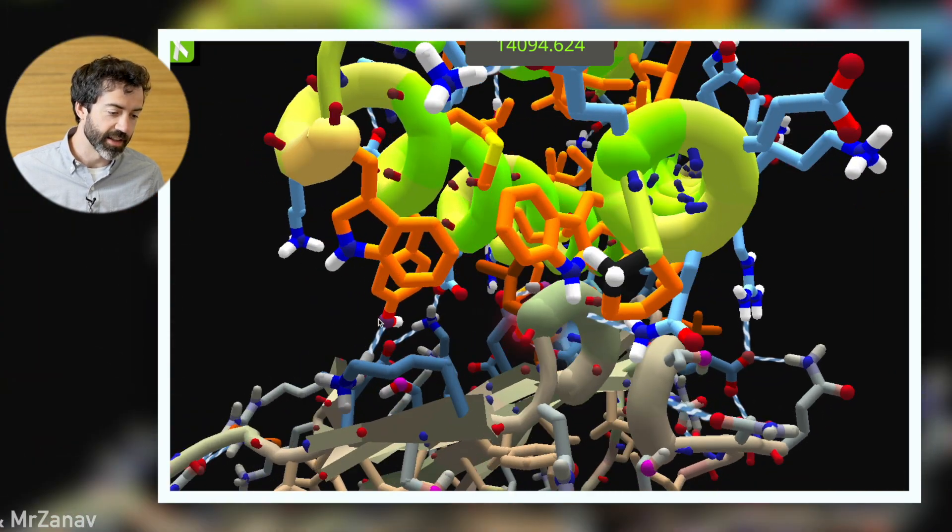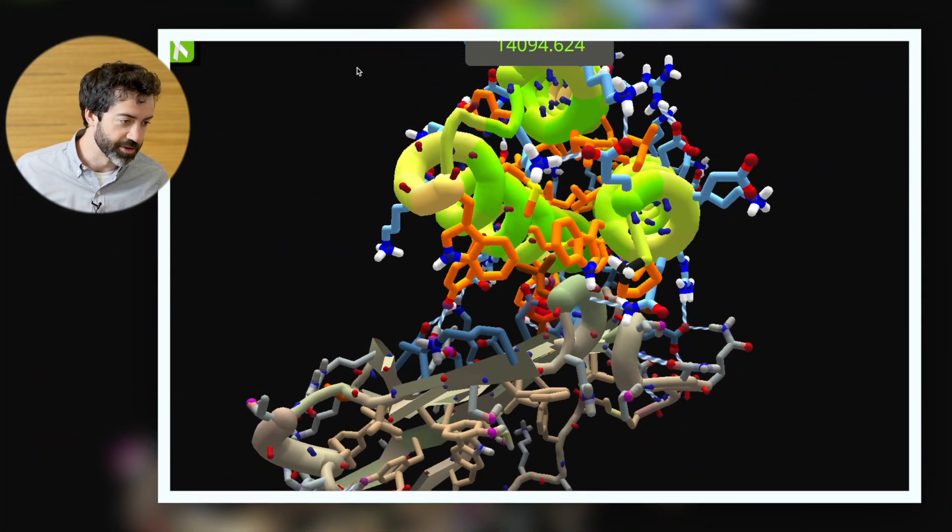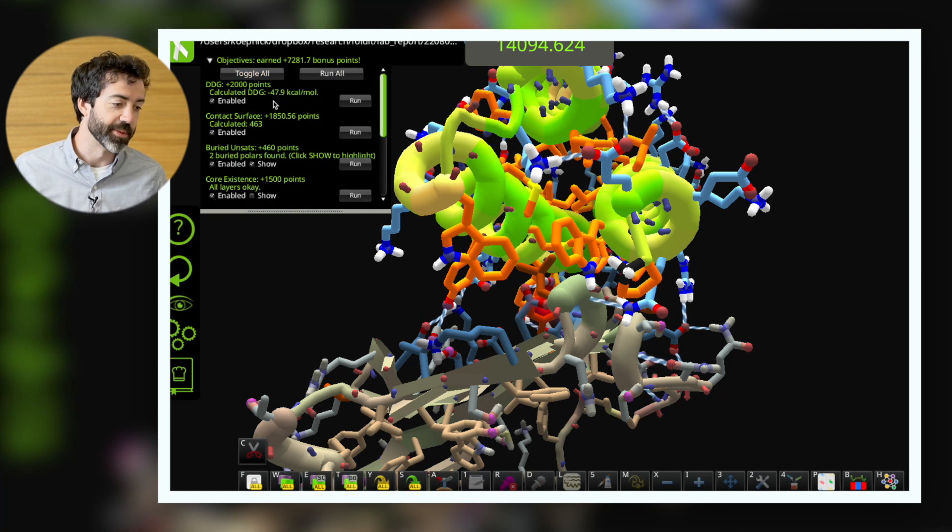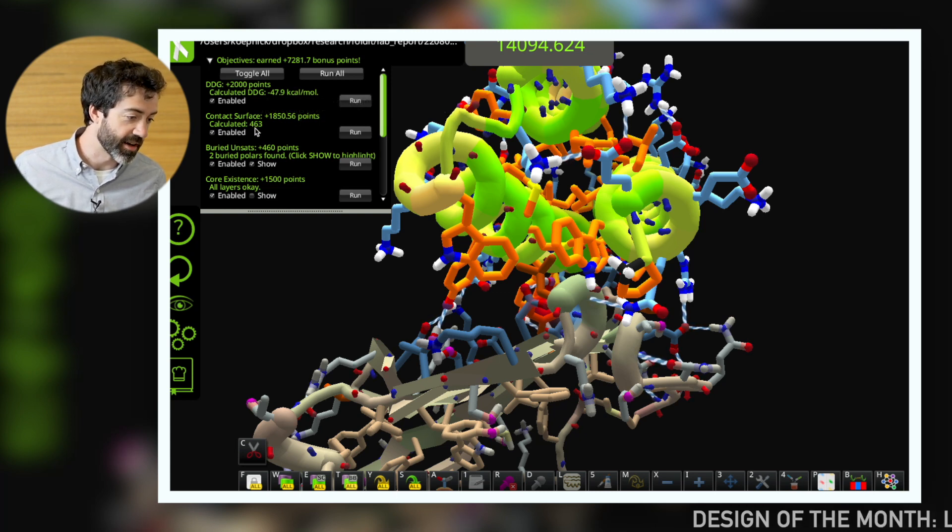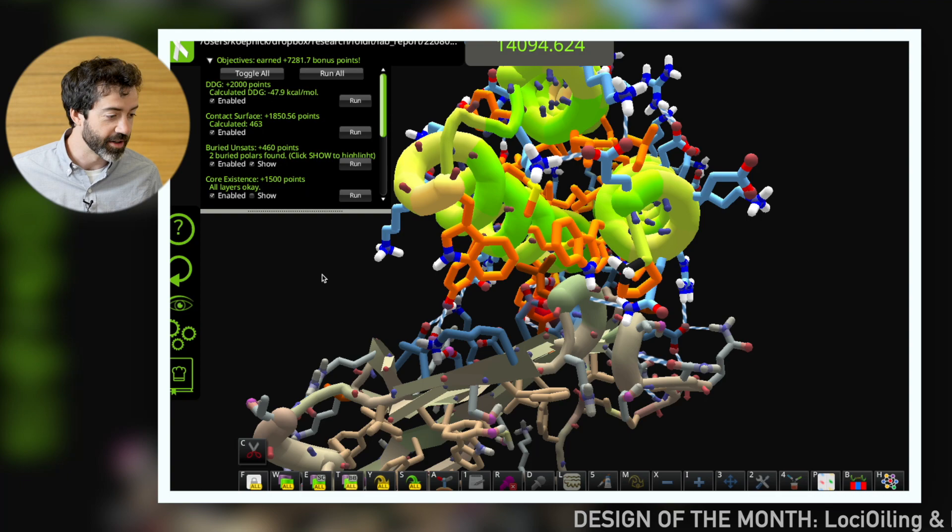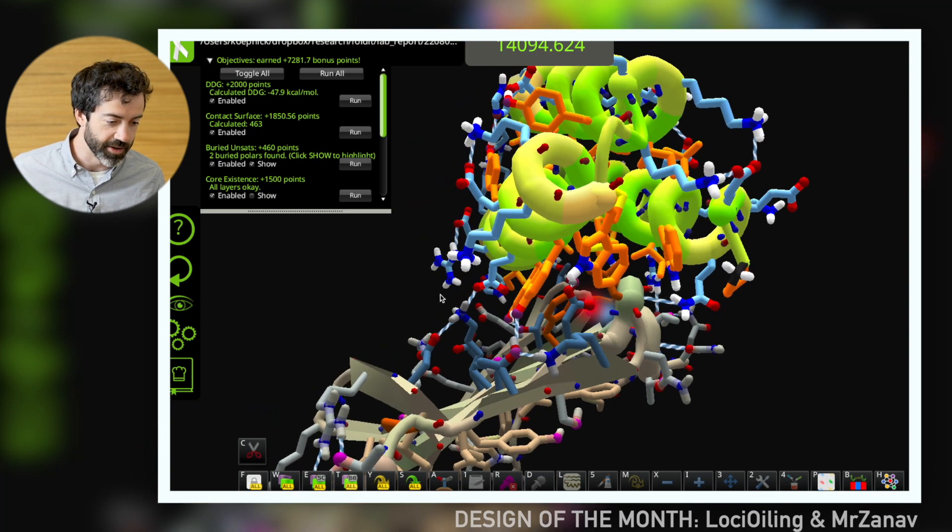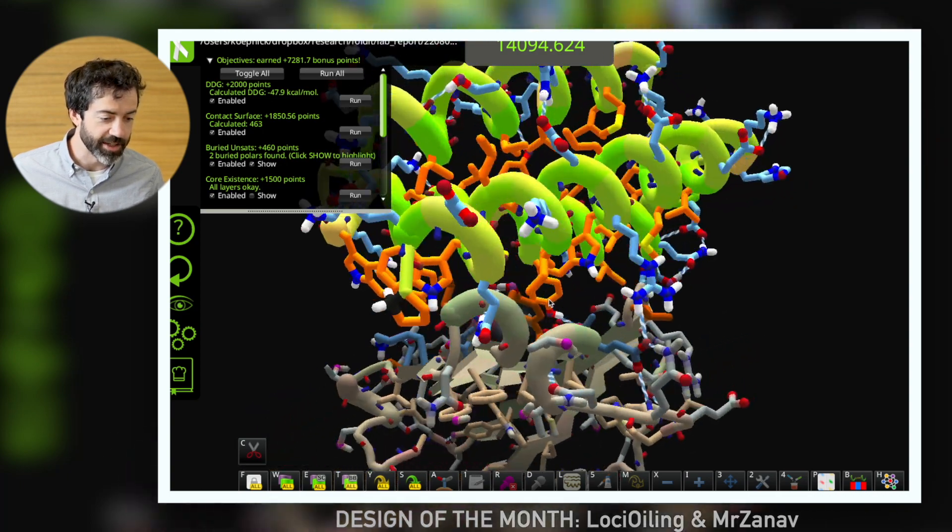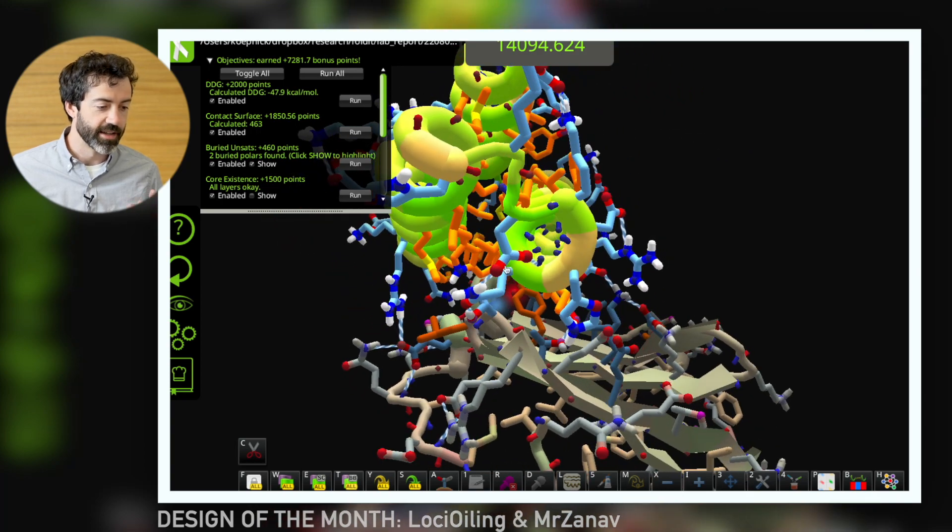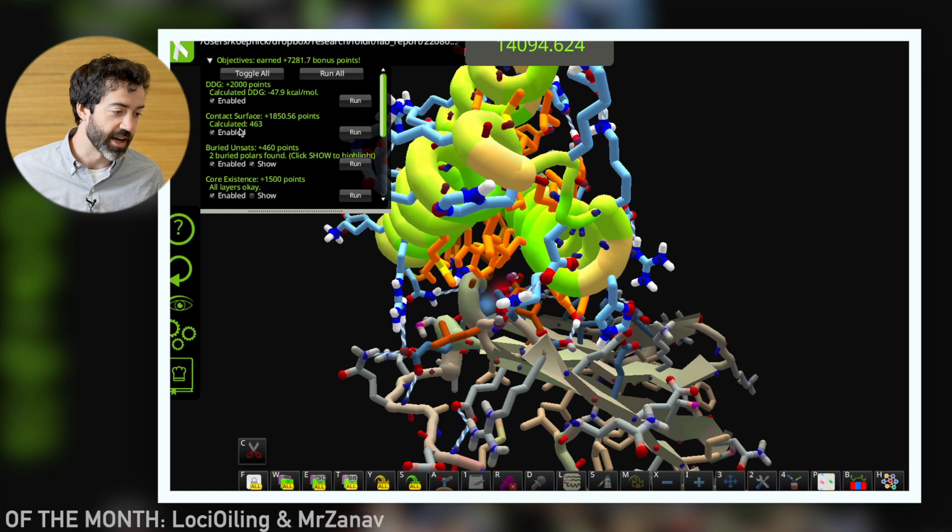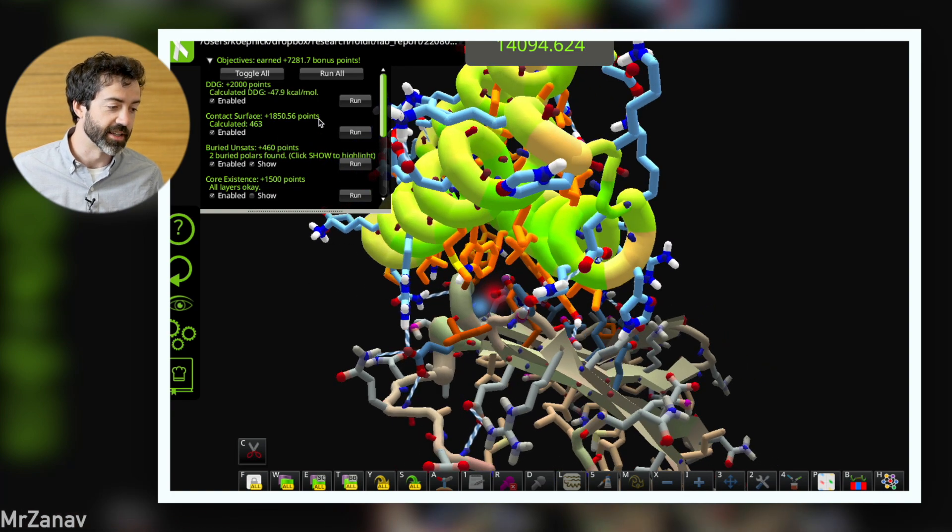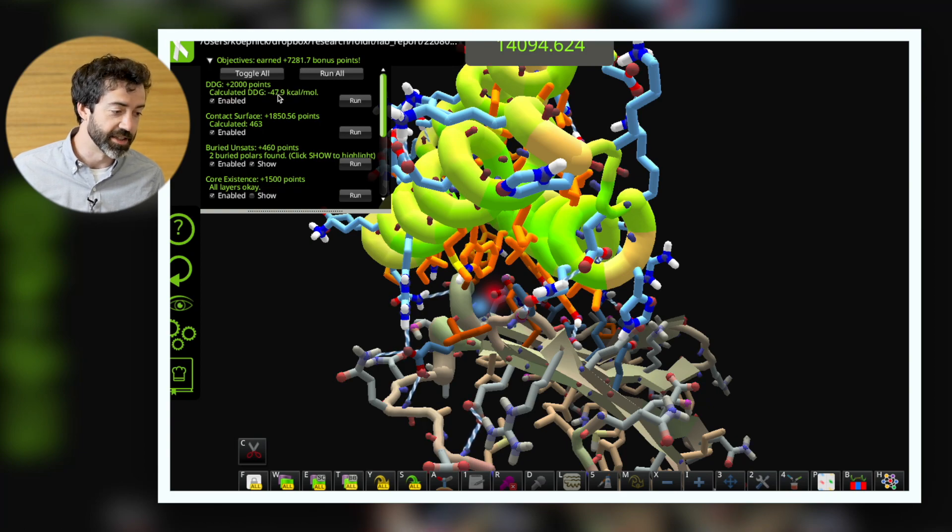The other thing that I would really like to praise about this solution is that we have some excellent binder metrics, a DDG of negative 48 kilocalories per mole and an extremely high contact surface of about 460. So these are very nice binder metrics. We like that this binder makes a complementary shape against the target, which gives us high contact surface. And all of that hydrophobic packing gives us tight binding in this large negative DDG.